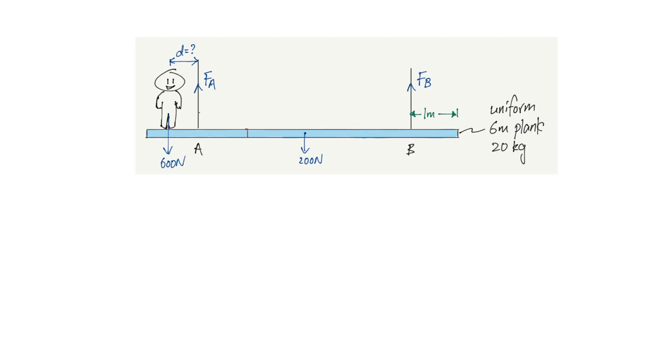In this last part of the question, you are required to find the maximum unknown distance D in which the man can walk to the left of point A before the thing topples. So initially it seems like a difficult question, but if you think about it, it's actually very simple. When this plank is about to topple, you should know that the string here will no longer be in tension. It's like sagging here. So the tension here will basically be zero.